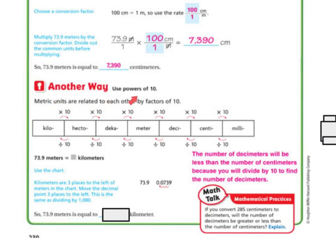Another way is just to use the powers of 10. So metric units are related to each other by factors of 10. So this is also another really good chart to have. So kilo is times 10 of a hecto. Hecto is times 10 of a deca. Meter is times 10 of a deca. Deca is times 10 of a meter. Centimeters times 10, and millimeters, and so on.